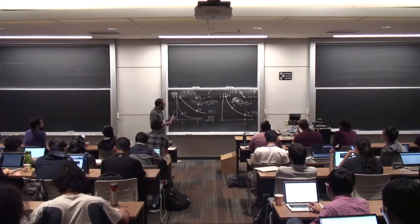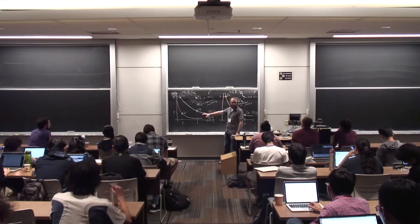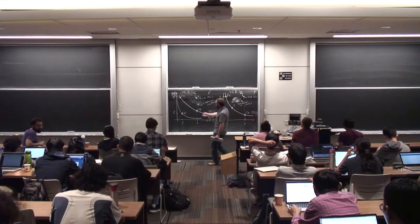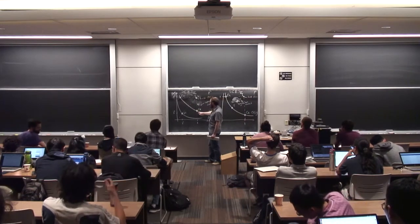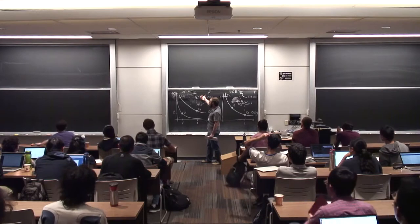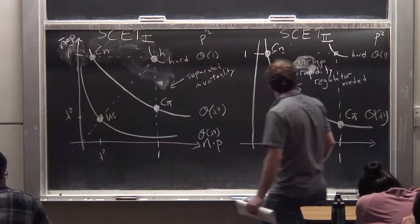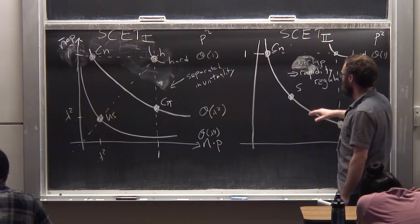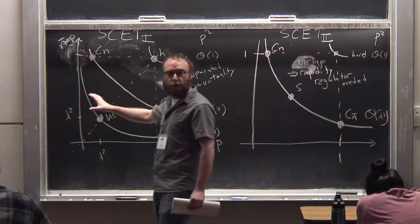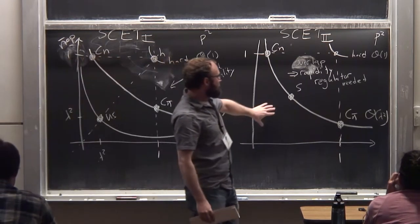At the end of last lecture I drew these pictures and I did it badly, so I thought it would be good to do this again. I put these in the wrong place. The collinear and anti-collinear directions are set by the hard scale, so they all get one, and the ultra-soft was suppressed by lambda squared. There are canonically two versions of the theory, and it depends on which process you pick which theory is relevant.